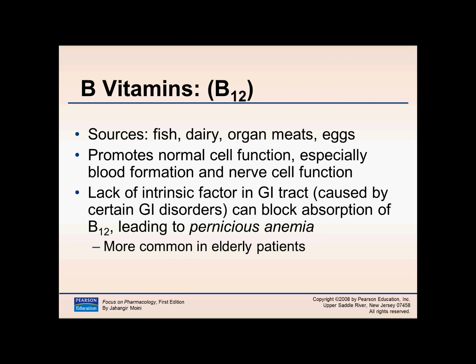Vitamin B12 — sources include fish, dairy, meats, and eggs. It promotes normal cell function, especially with blood formation and nerve cell function. If you do not have enough B12 it can lead to anemia, and you'll see this in elderly patients quite a bit.